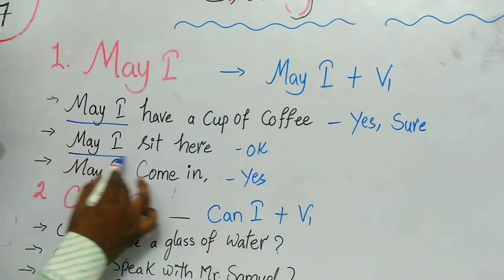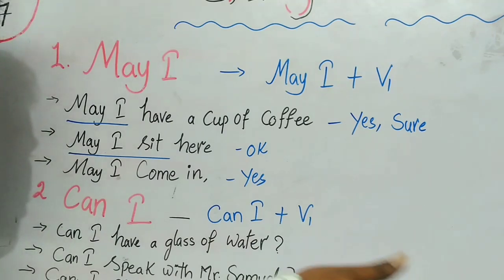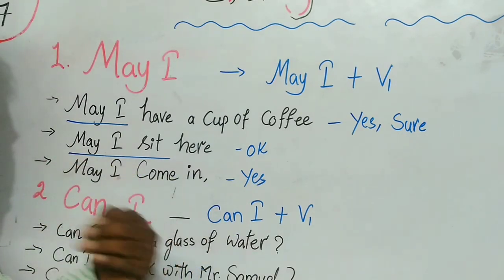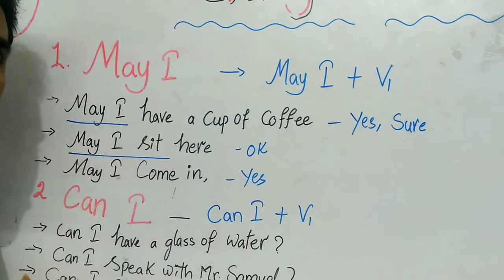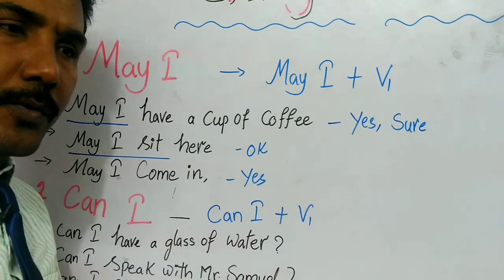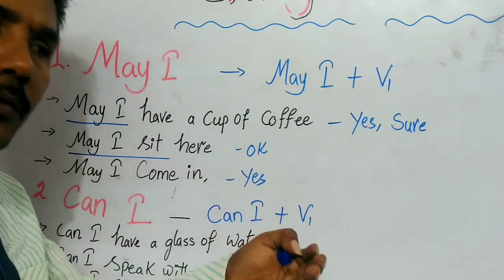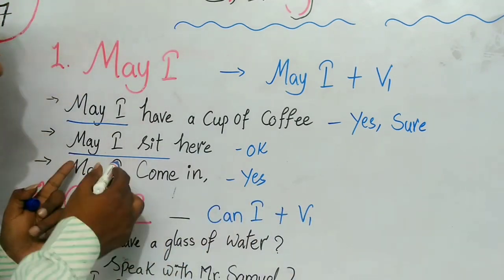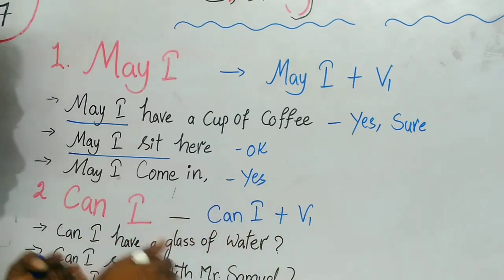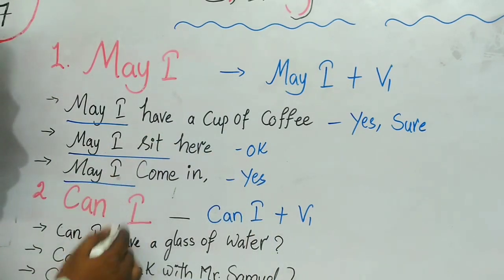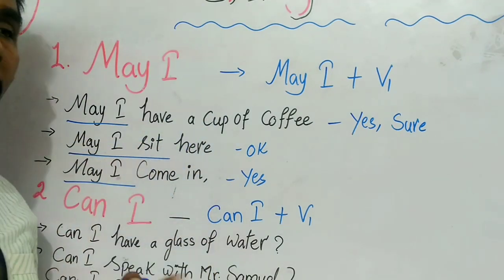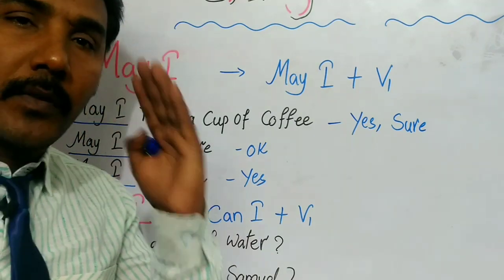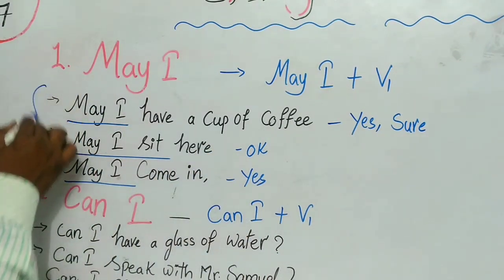May I sit here? May I come in sir? Yes, may I come in ma'am? Yes you can. Like that we can accept. These are beautiful examples with May I.